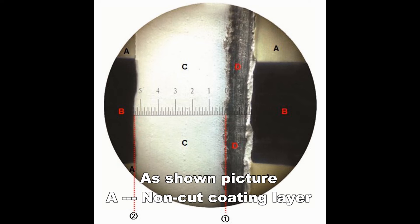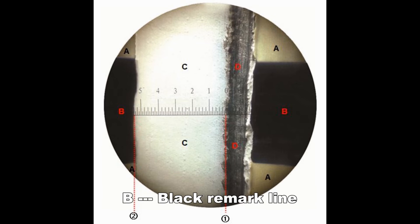As shown in the picture: A is the non-cut coating layer, B is the black mark line, C is the cut coating layer, and D is the substrate.